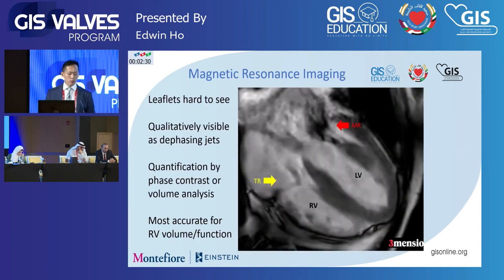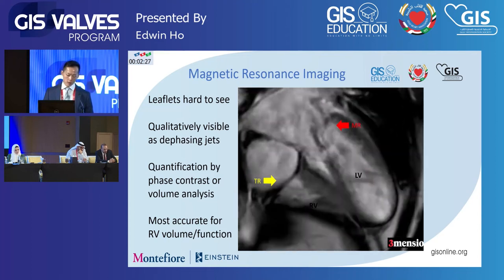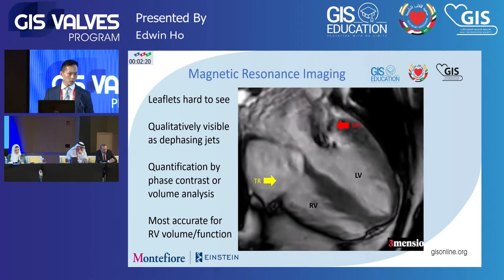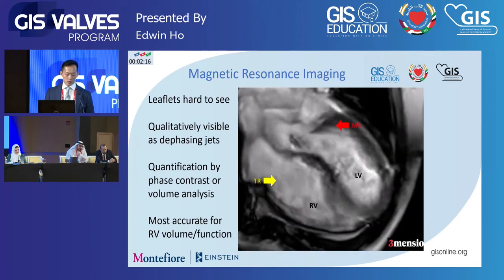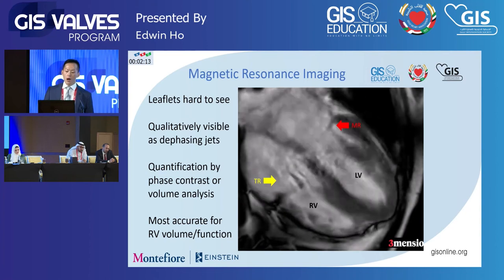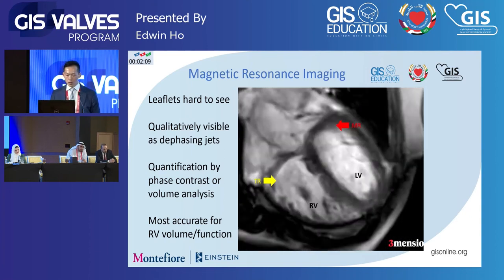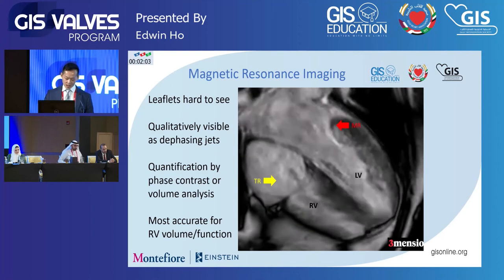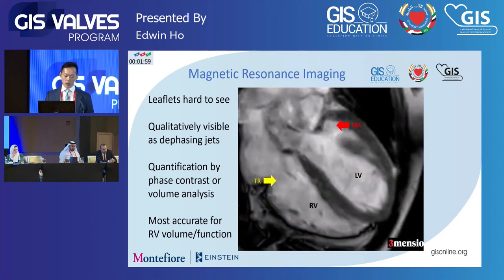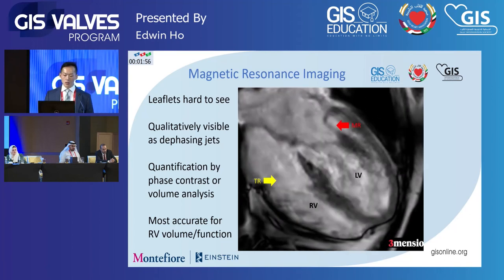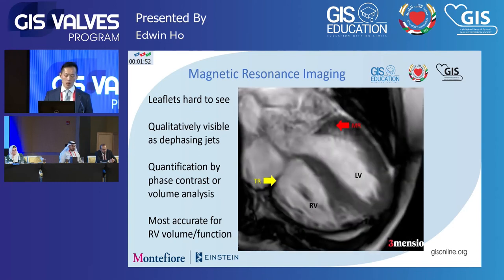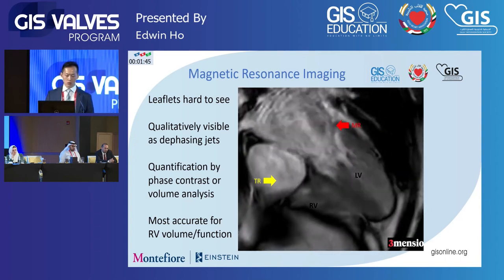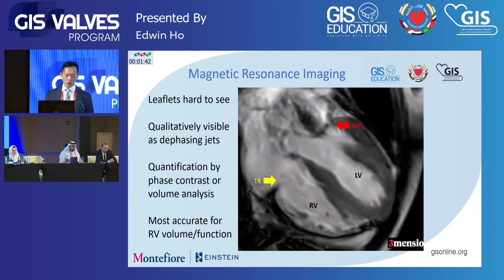Lastly, MRI gets brought up a lot when talking about right-sided and tricuspid valve disease. From an anatomy point of view, similar to CT, you can see the leaflets, but they're often not as sharp as would be ideal to look at anatomy in detail — so echo remains king for that. However, you can get a lot of good functional information. In this cine loop, you can see dephasing jets for both MR and TR. We can also use phase contrast or volumetric methods to quantify how bad the TR is, which is very helpful when echo is not definitive. MRI is probably a bit more accurate for RV volume and function, though for anatomy the role is more limited.